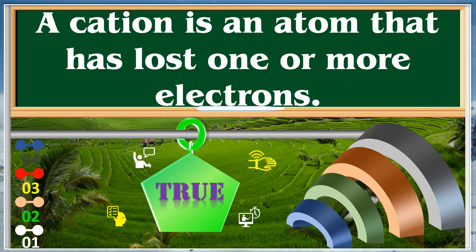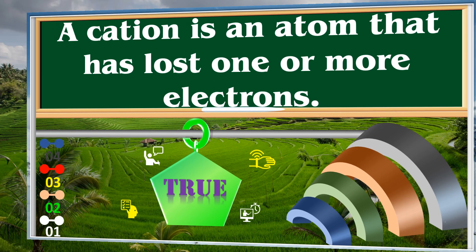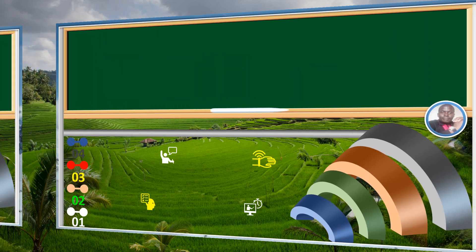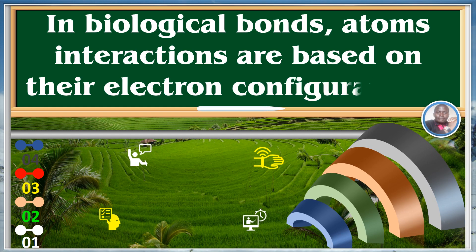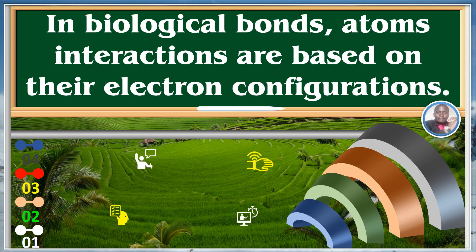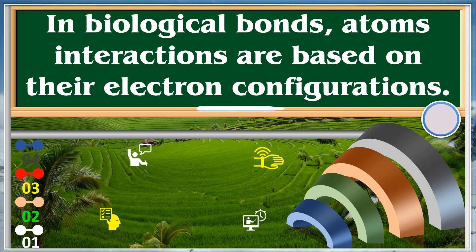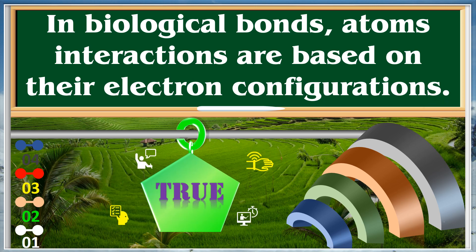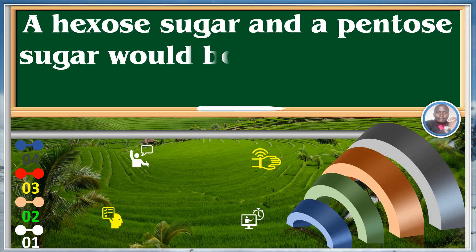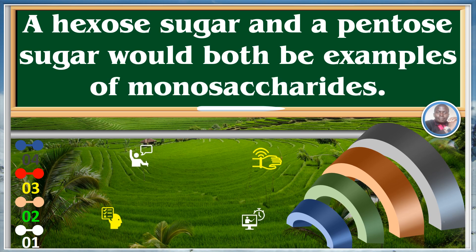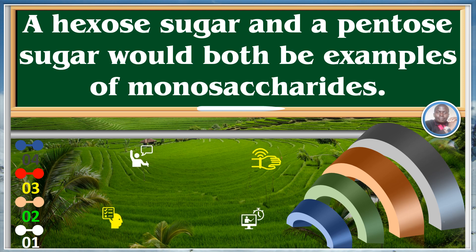In biological bonds, atom interactions are based on their electron configurations. True. A hexose sugar and a pentose sugar would both be examples of monosaccharides. True.